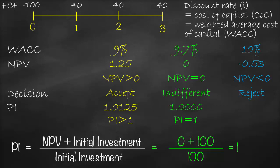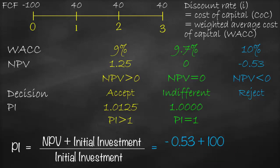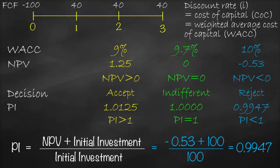For our last scenario at WACC 10%, it's equal to NPV of negative 0.53 plus initial investment of 100 divided by initial investment of 100. This gives us 0.9947. So our profitability index is 0.9947. Our decision rule is profitability index is lower than 1, so we will reject the project. We are not going to recover our initial investment. Consequently, if NPV is lower than 0, profitability index must be lower than 1.